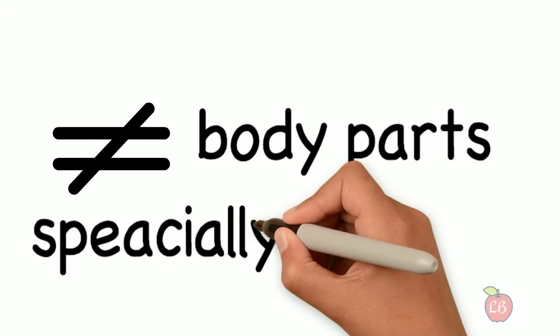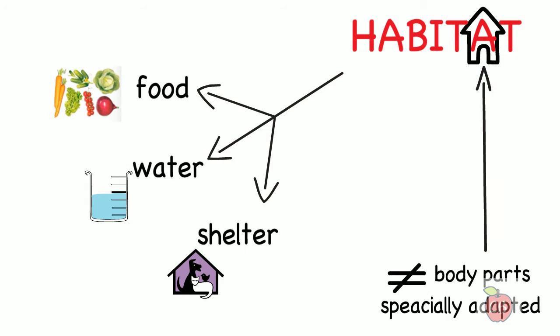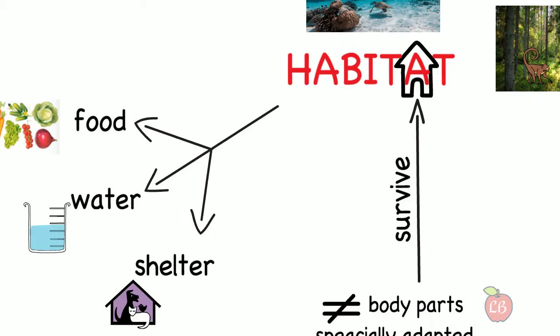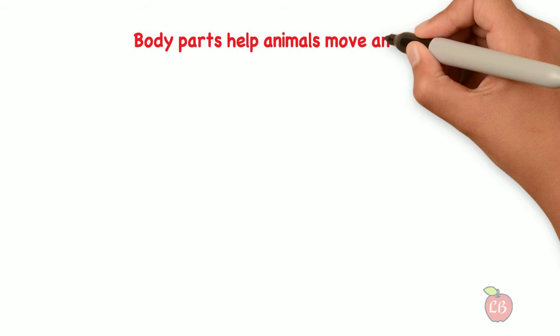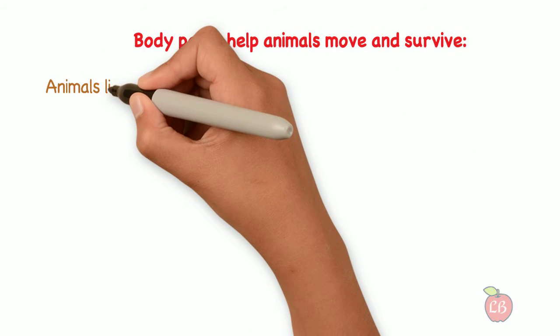Animals have different body parts which are specially adapted to survive in their own habitat. Now let's have a look at these special body parts that some animals have, which help them move and survive in their habitat. Let's start with animals living on land.